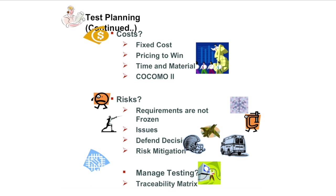Costing is also a very important part of test planning. There could be different kinds of cost models: fixed cost, pricing to win, time and material (T&M), or COCOMO. These are different approaches to identify the cost. Then you have to plan for risk — requirements not being frozen, open issues, decisions to defend, risk mitigation, managing testing, testability metrics. There are many different kinds of risk, and they all need to be included in the test plan.